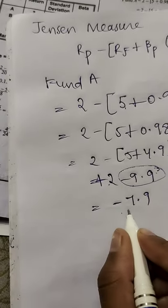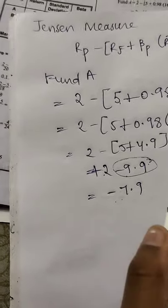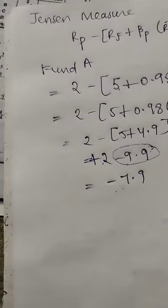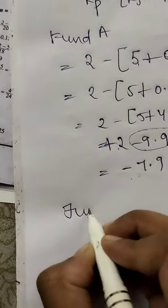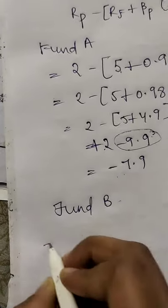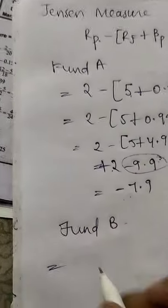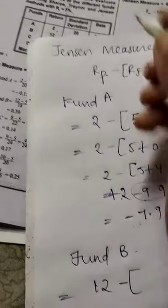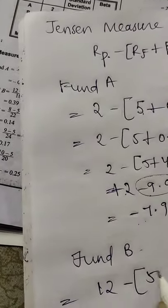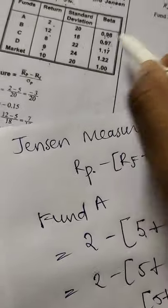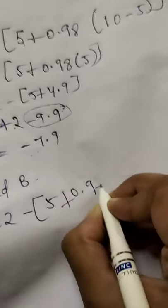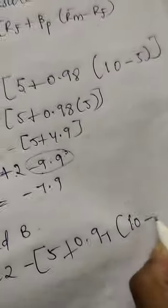Similarly Fund B. For Fund B, Rp is 12 minus Rf is fixed which is 5, plus beta value is 0.97 into Rm—market value is fixed 10 minus Rf is fixed.